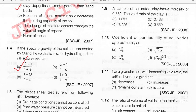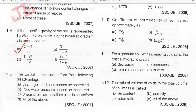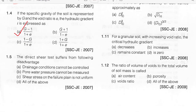Direct shear test suffers from the following disadvantages: drainage conditions cannot be controlled; pore water pressure cannot be measured; shear stress on the failure plane is not uniform. All of these are correct, so the answer is option D, all of the above.